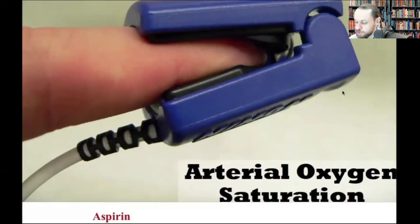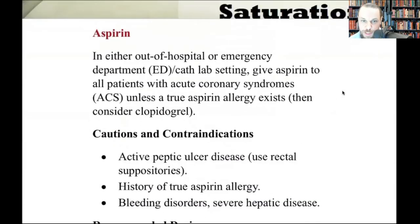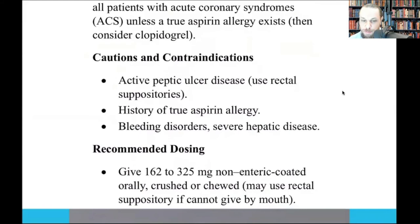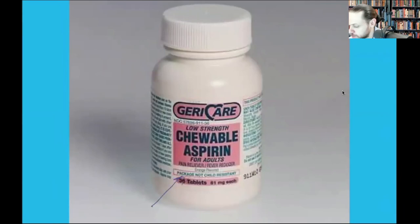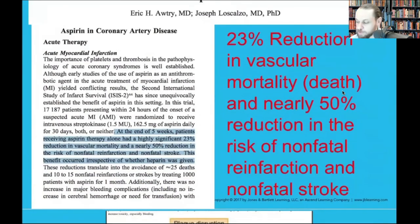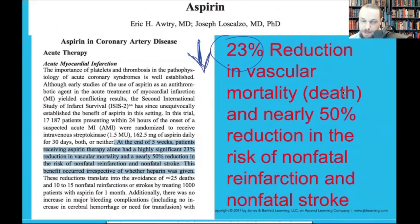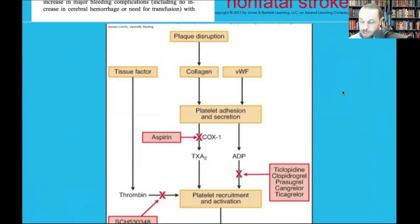Give aspirin 324mg orally — have them chew it — if there are no allergies. It must be non-enteric-coated. Aspirin stops platelet aggregation via the cyclooxygenase pathway and is the only medication in this setting that reduces mortality — by 23%. No other drug achieves this, making it the single most impactful intervention you can provide for a cardiac patient.